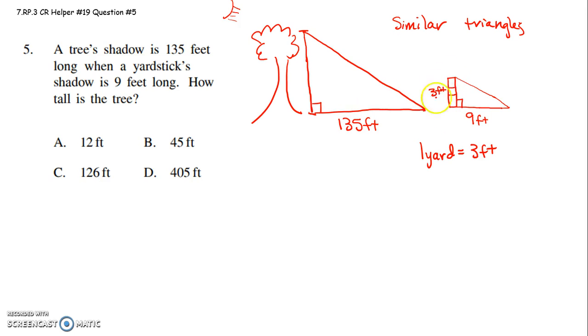So now I have similar triangles. I know this side is 3 feet. The side that corresponds to the 3 foot side, I don't know. I know here, this side is 9 feet. The corresponding side is 135 feet. Because the length of the shadow is what corresponds.